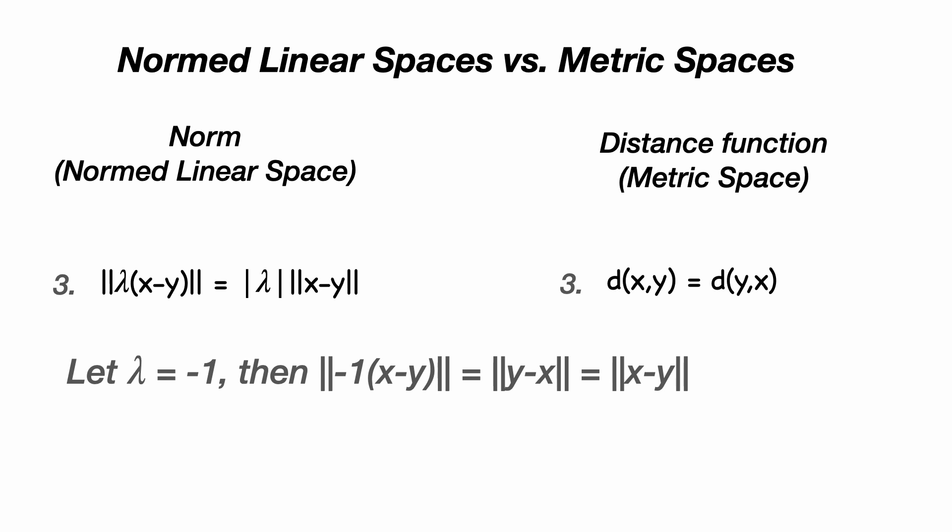And so we've changed the direction, we're taking the norm, and we have equality in this case. This is exactly the same as what we see in our metric space where d of X and Y equals d of Y and X. Except in the concept of a normed linear space, we've refined this property so that we're actually saying much more about what happens when we're performing linear transformations on the elements of our space.